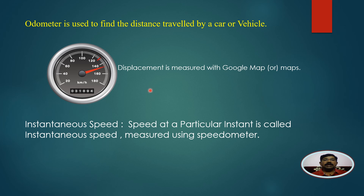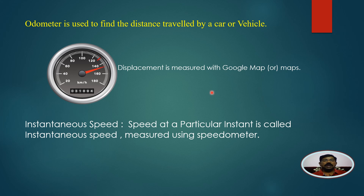To calculate the velocity of a vehicle, we need the displacement, which we measure using Google Maps. In Google Maps there is a scale - for example, if the distance between Hadaba and Bungiri on the map is 7 centimeters and 1 centimeter equals 500 meters, then 7 centimeters equals 3,500 meters, that is 3.5 kilometers. Displacement divided by time taken gives the velocity of the vehicle.